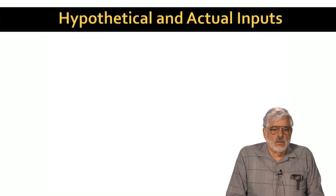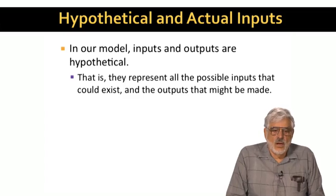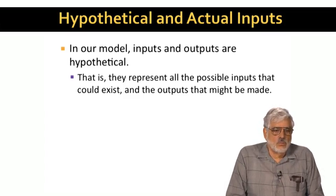There's a subtlety in our model that is not apparent from the examples of drug interactions and matrix multiplication. In these cases, the input set is fixed, and the output values depend on the inputs. But which outputs are made is also fixed. But in some important examples, what we call the inputs and outputs are really an envelope encompassing all those hypothetical inputs that might occur in some run of the algorithm, and all the outputs that might be made, depending upon what combinations of inputs are present.